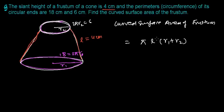And now we can just put the values of r1 and r2 and everything. So we know l, we don't know r1, we don't know r2. So what I'm going to do, I'm going to write this l first, and then I will write here π.